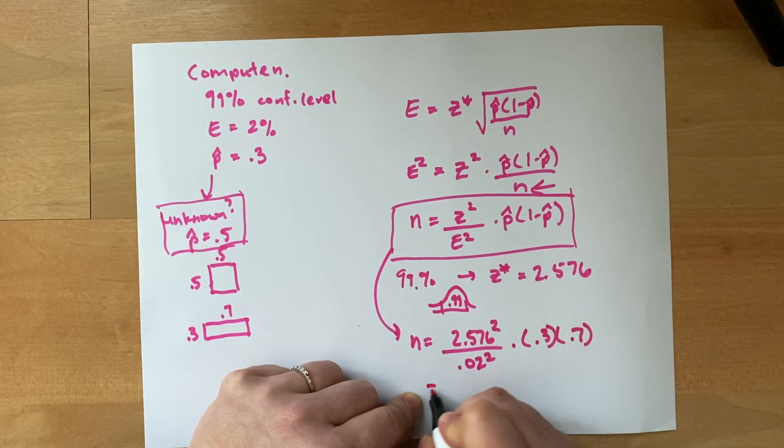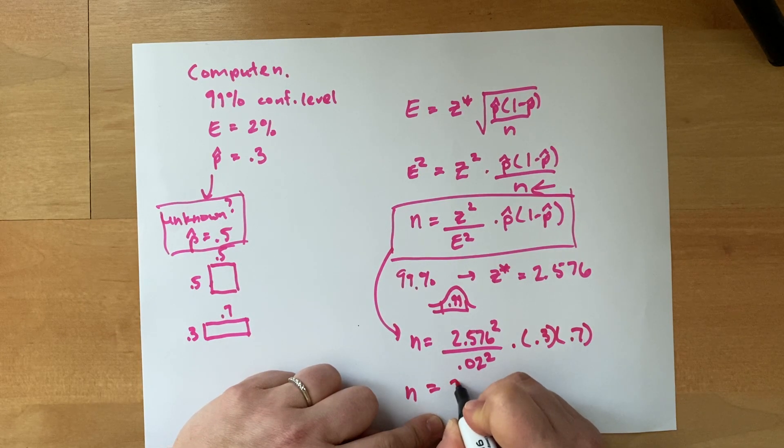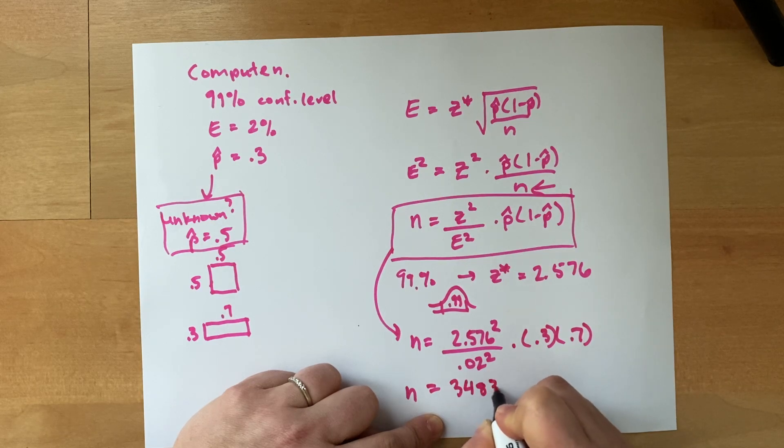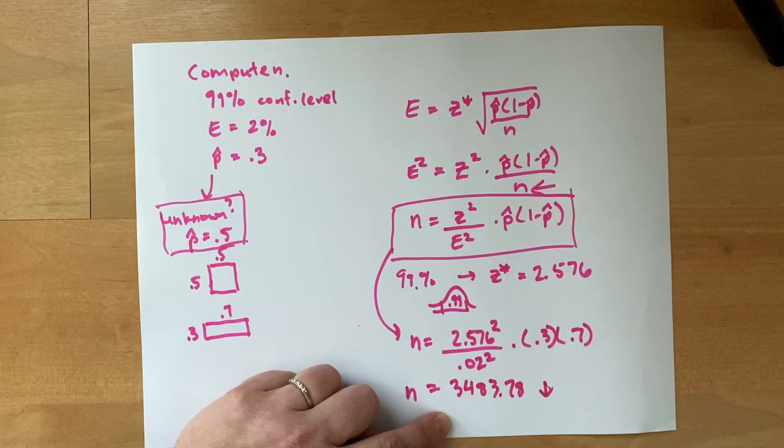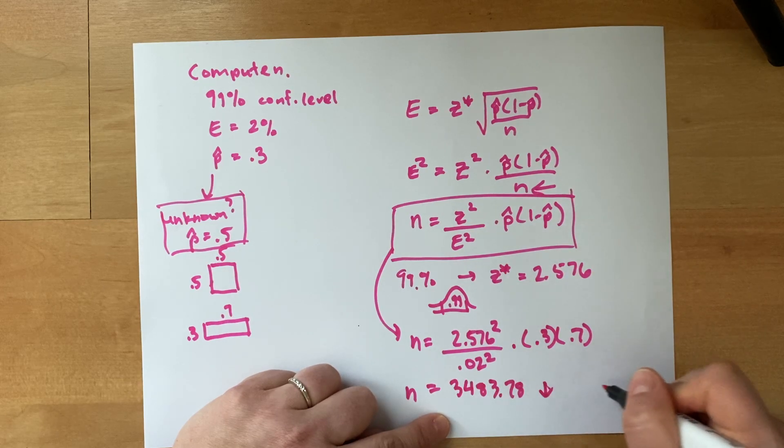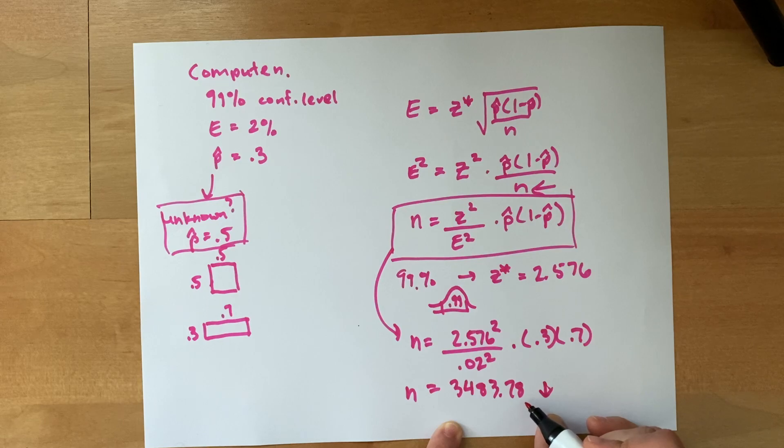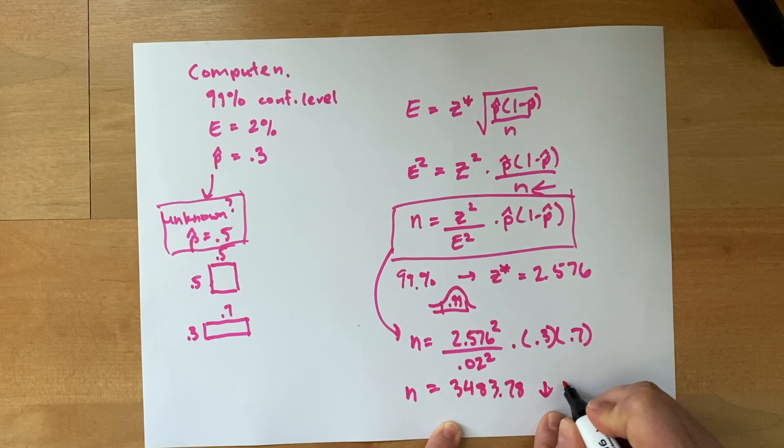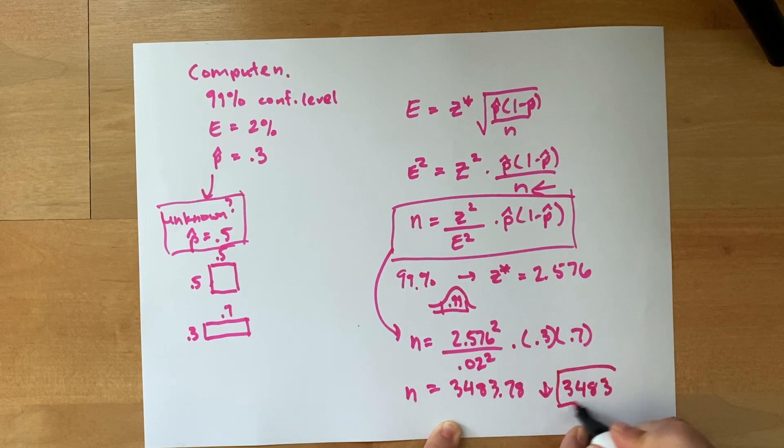All right, so when we do this, I've already worked it off to the side, I get 3,483.78. So what we do traditionally with sample sizes when we're trying to figure them out is we always round down to get to the next smallest number because we can't sample 0.78 of a person. We can only sample full people. So 3,483 would be your sample size.